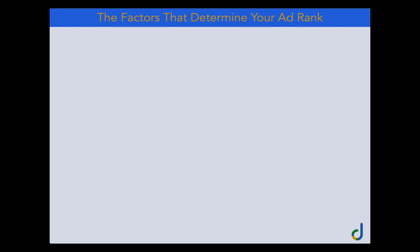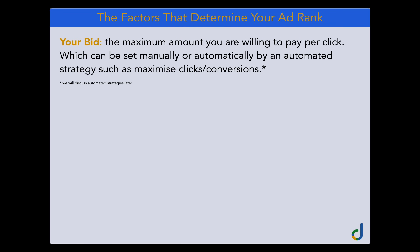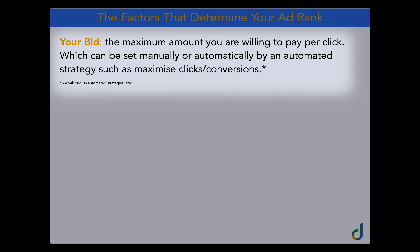The first factor that determines your ad rank is your bid — the maximum amount you are willing to pay per click. This can be set manually, but it can also be set automatically when using automated bidding strategies like maximize clicks, maximize conversions, or maximize conversion value. With an automated bidding strategy, Google controls your cost per click to achieve your goal. Google Ads is based on an auction, so the amount you're willing to pay definitely matters.